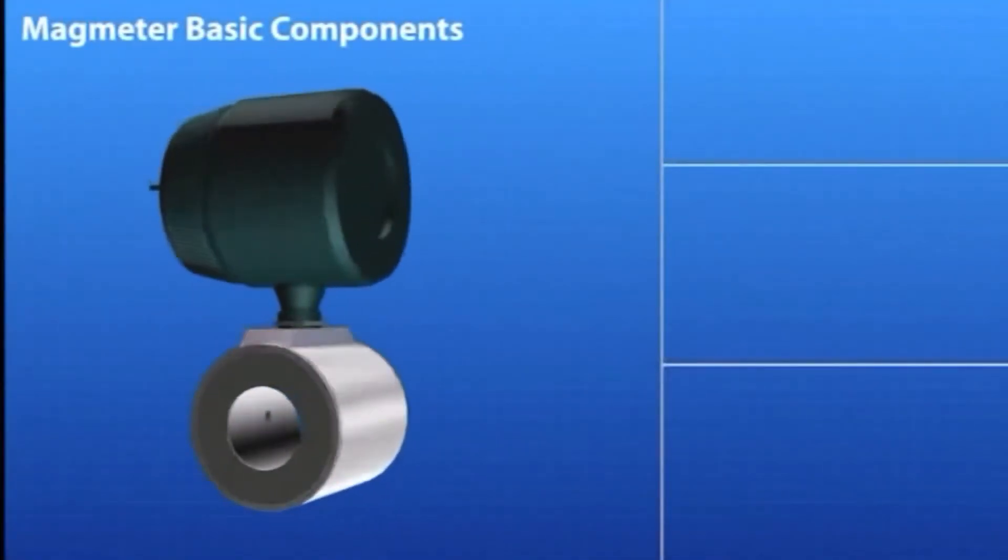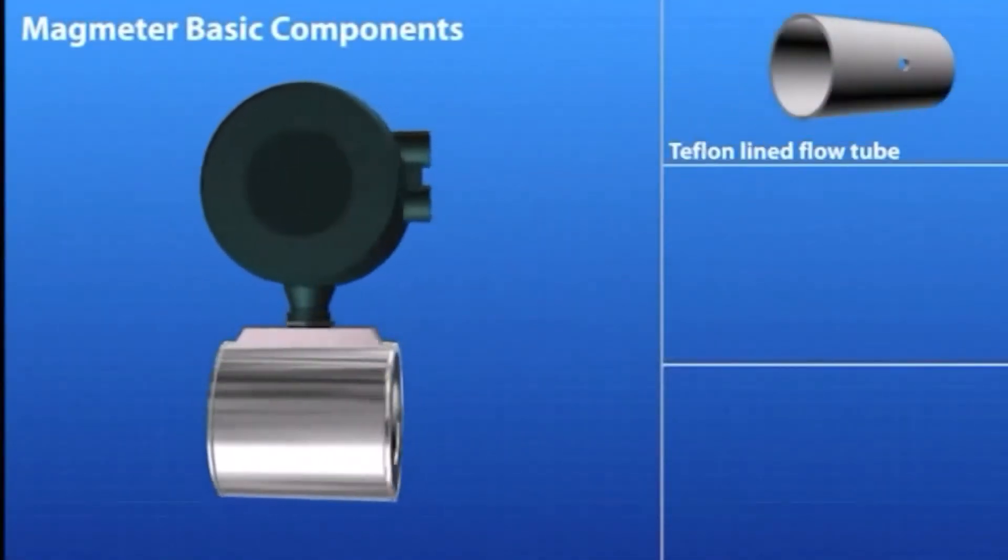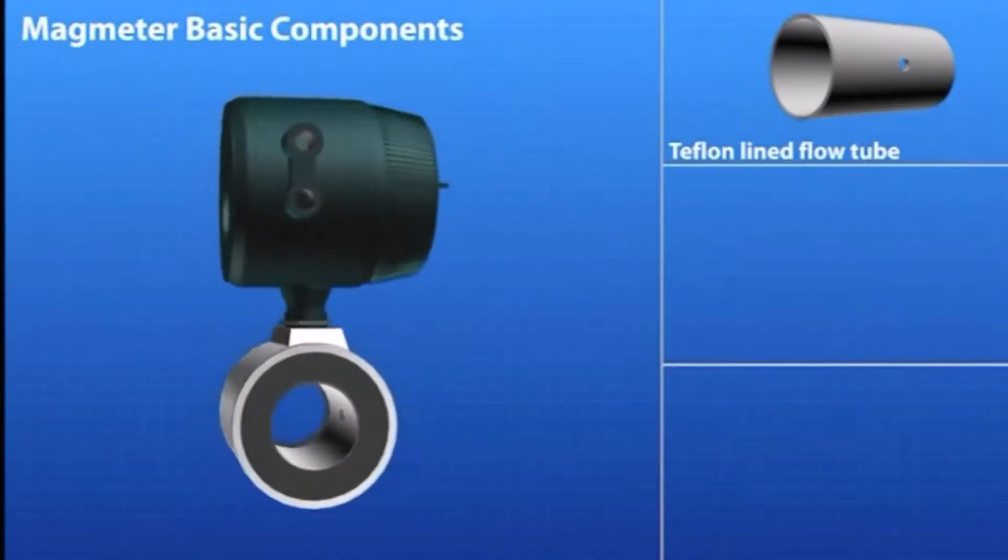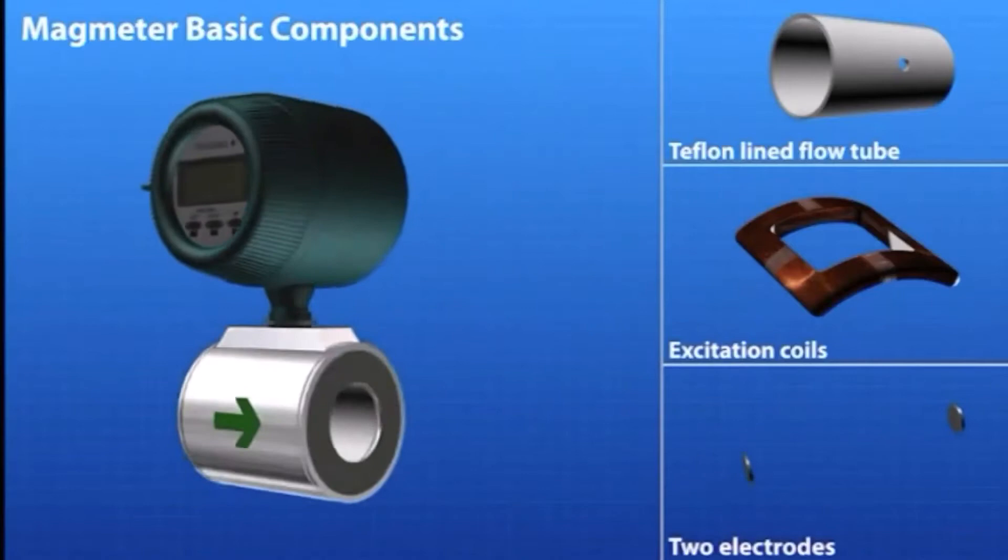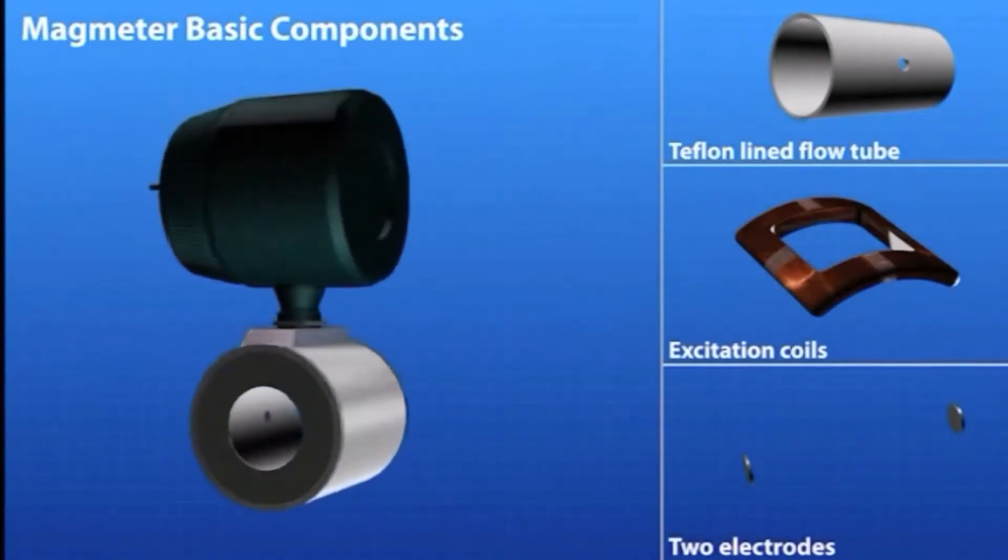The basic components of the magnetic flow meter body are a lined flow tube, typically Teflon, excitation coils, and two electrodes mounted opposite of each other within the flow tube.